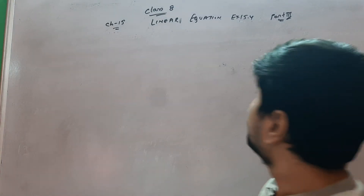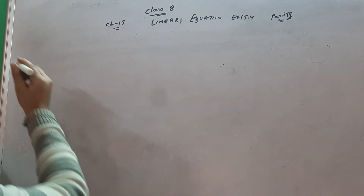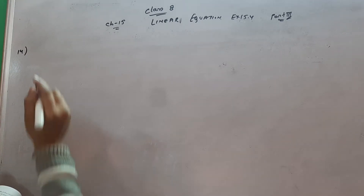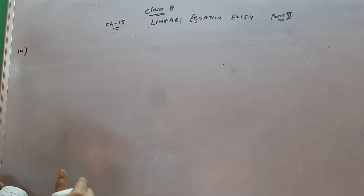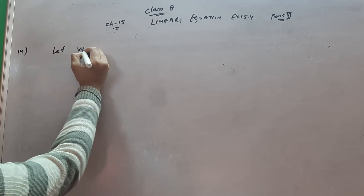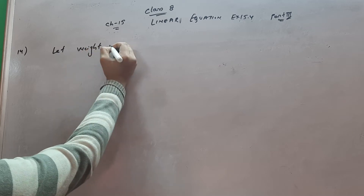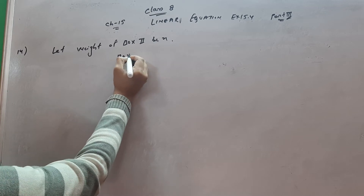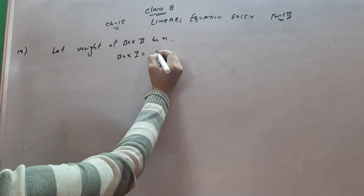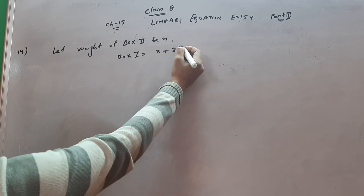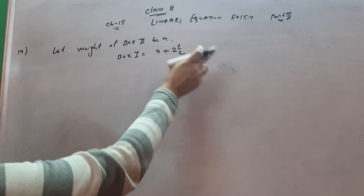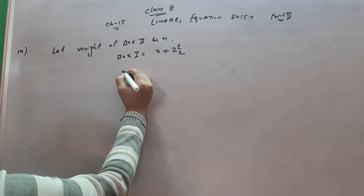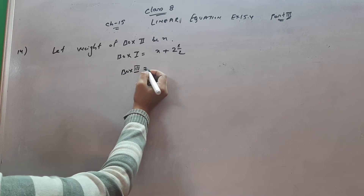This is part 3, video from exercise 15.4, question number 14. Sunny has three boxes of different types of sweets. Box one is two and a half kg more than box two. So let the weight of box two be x. Box one weight equals x plus two and a half.